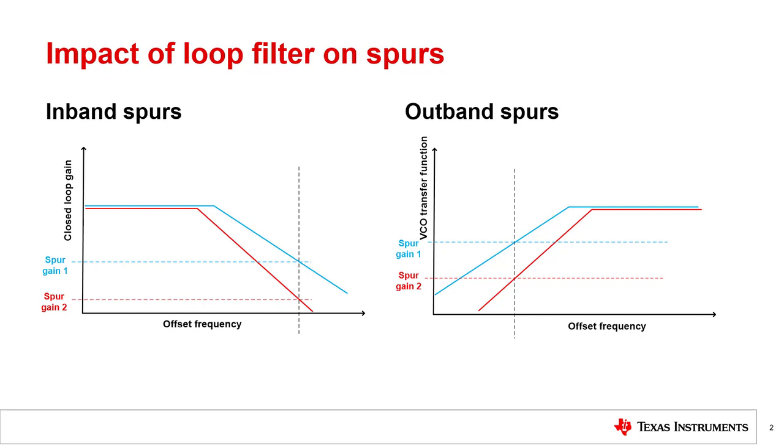How can we use the loop filter to attenuate different types of spurs? Spurs can be divided into two broad categories based on the mechanisms of the PLL that help provide attenuation. These two categories are in-band spurs and out-band spurs.